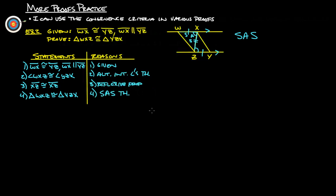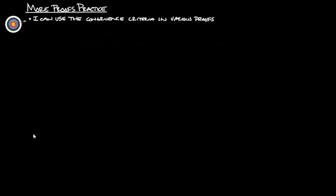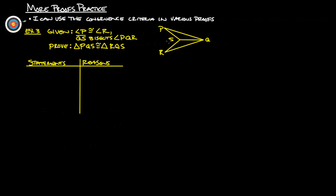Alright, let's do our last example. Given that angle P is congruent to angle R, and QS bisects angle PQR. So this angle is congruent to this angle. We should be able to figure out from the bisector that this angle is congruent to this angle, but we need to prove it first.